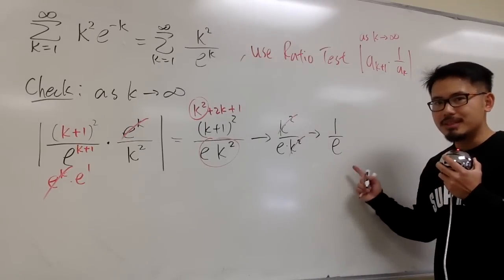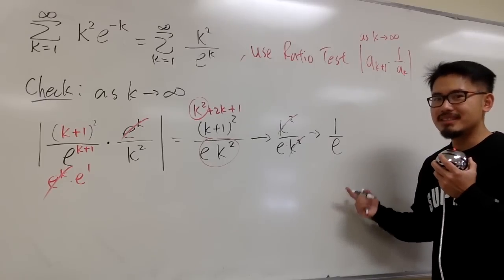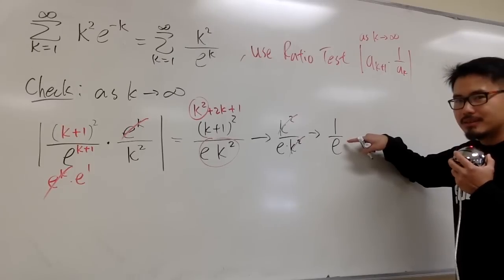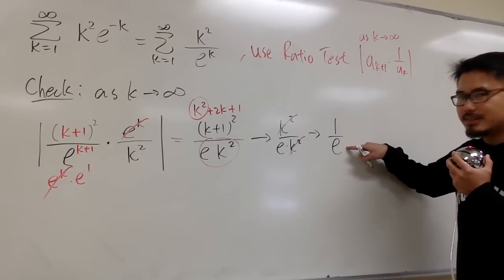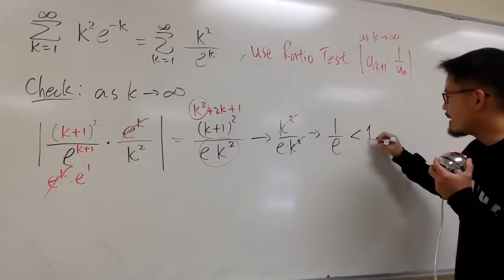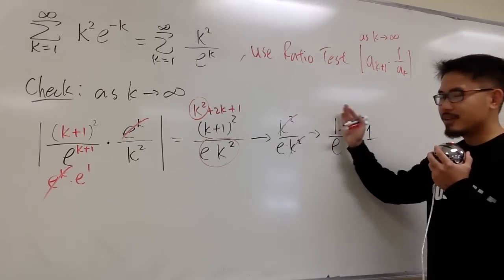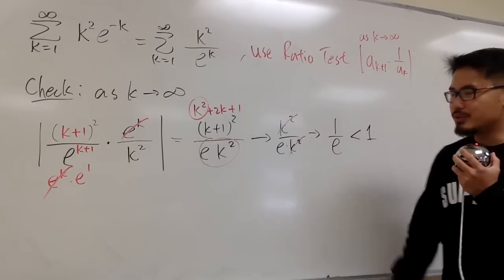And now this is the limit. How big is this limit? We know e is about 2.7 something. 1 over e, it's going to be less than 1. Is this good or bad? Well, this right here, we know it's less than 1. We can draw conclusion.